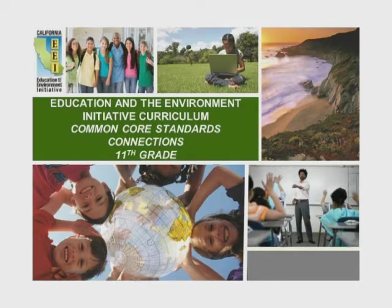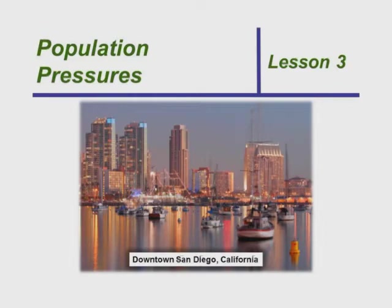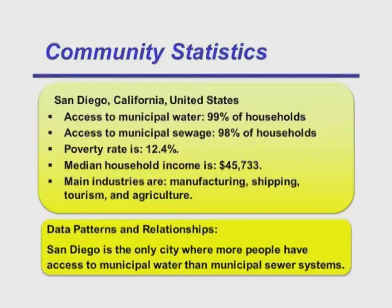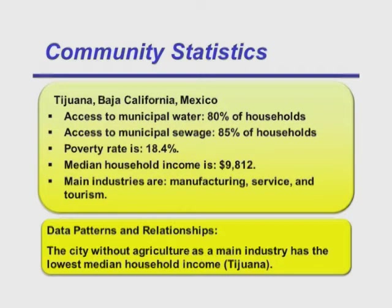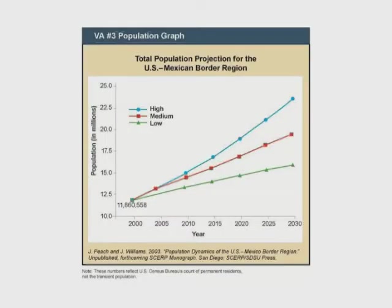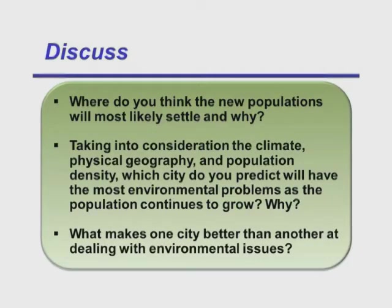11th grade. Students look at population pressures — they look at graphs, data, make connections and patterns. They look at San Diego and some statistics, determining data patterns about how it differs from other cities. Then they look at Tijuana and discover it has the lowest median household income, noting that correlation with lack of agriculture as a main industry. They look at graphs, analysis, discuss questions, and write — lots of writing. So they're evaluating multiple sources and supporting findings with evidence.